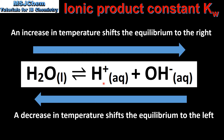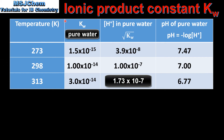Because Kw is equal to the concentration of the hydronium ion multiplied by the concentration of the hydroxide ion, any changes in the concentration of these ions will also affect the value of Kw. In this table we have the values of Kw for pure water at 273, 298 and 313 Kelvin. As you can see, as the temperature increases so does the value of Kw.